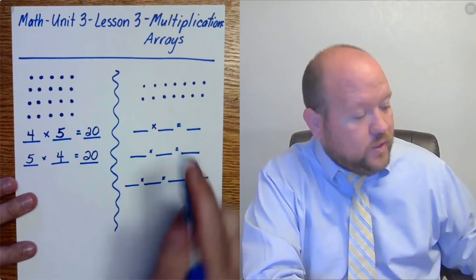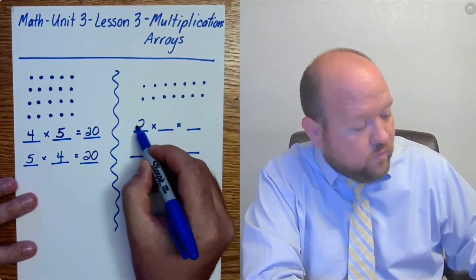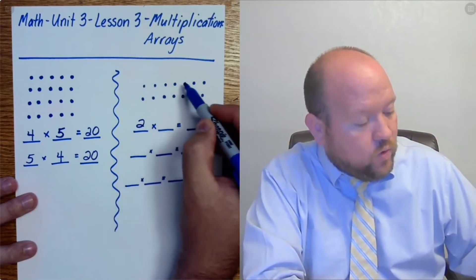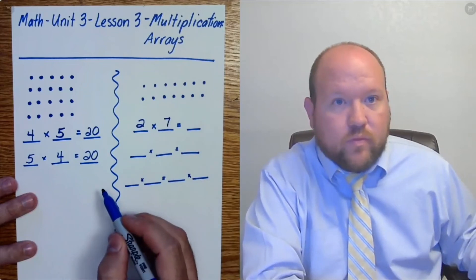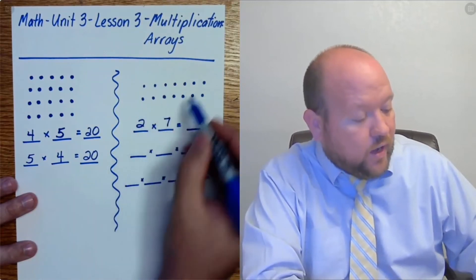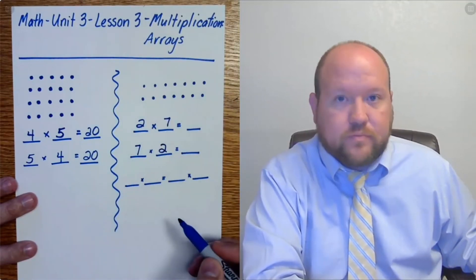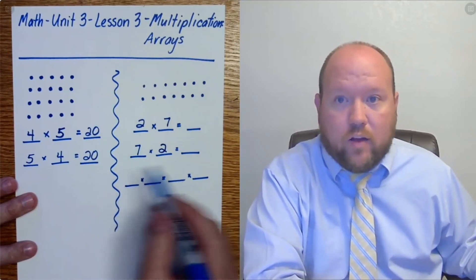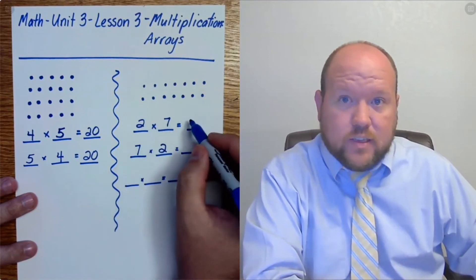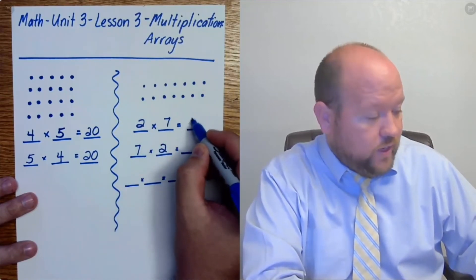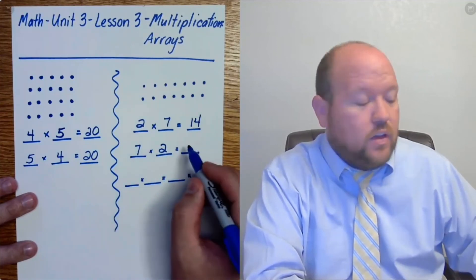All right, so I'll look at this one. This one, I can say there are two rows and there are one, two, three, four, five, six, seven in each row. Or I could say there are seven columns and there are two in each column. However I want to word that, however I want to solve that, either way is fine here. Two times seven is 14, thus seven times two is 14.